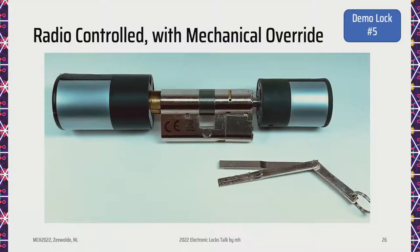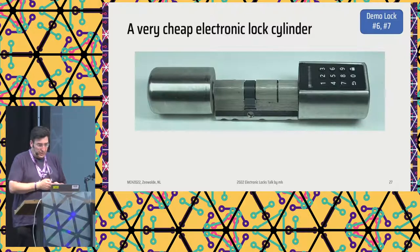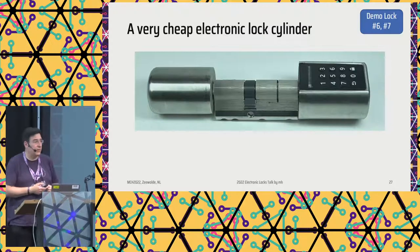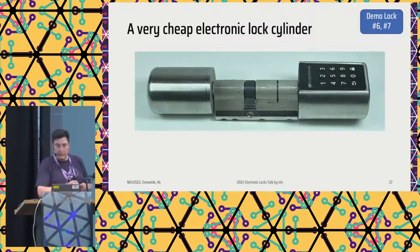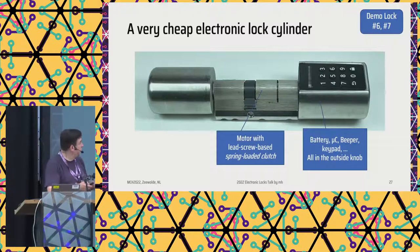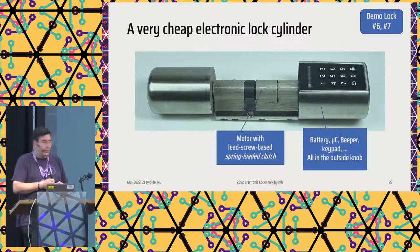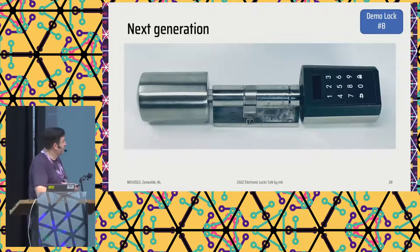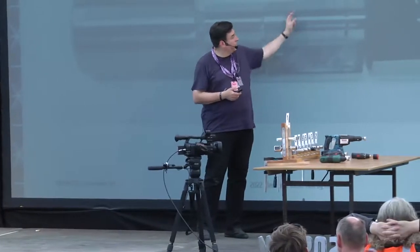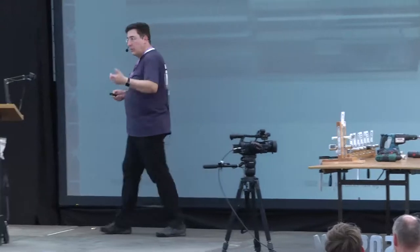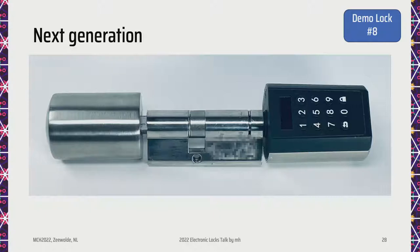There is a very similar design by another manufacturer — this one even has a mechanical override, a really neat design, but same problem. The expensive locks I've shown are a few hundred euros per piece. There are also cheap electronic lock cylinders you can import from Asia. This one has a lead screw based clutch mechanism, again spring-loaded, with all the electronics in the outside knob. There are two generations of them, pretty similar but slightly different. Then a completely different next generation actually has two little motors inside — quite nice, like a redundant thing. One can be activated through Bluetooth and the other requires a USB override. But both of them actually have the problem we've seen.